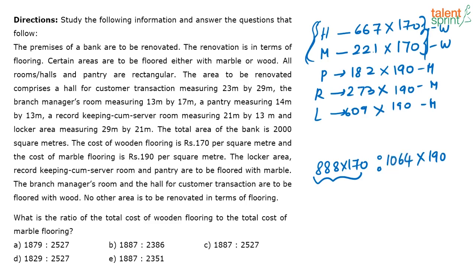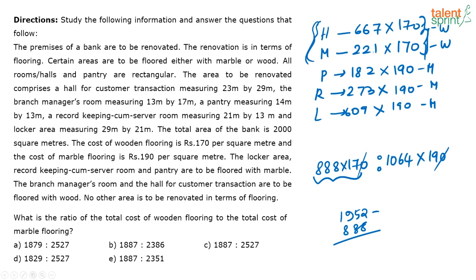Alternatively, since the total area being reworked is 1952, you can directly do 1952 minus 888 to still get 1064. Either way, when you find this ratio, you get 1887 is to 2527, which is option C.